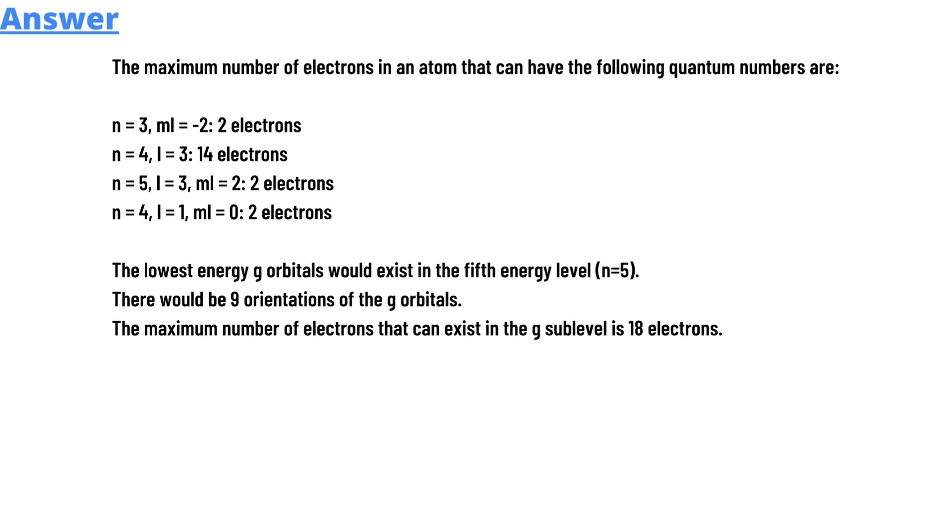The maximum number of electrons in an atom that can have the following quantum numbers is given in the formula below. The lowest energy g orbitals would exist in the fifth energy level with n equals five. So there would be nine orientations of the g orbitals. The maximum number of electrons that can exist in the g sublevel is 18 electrons.